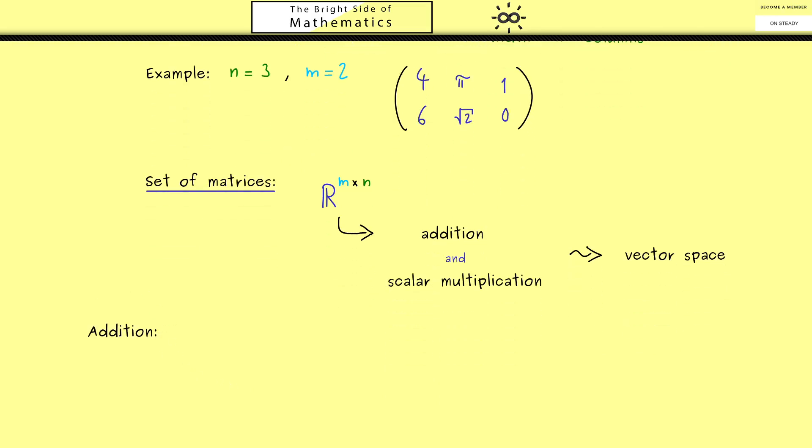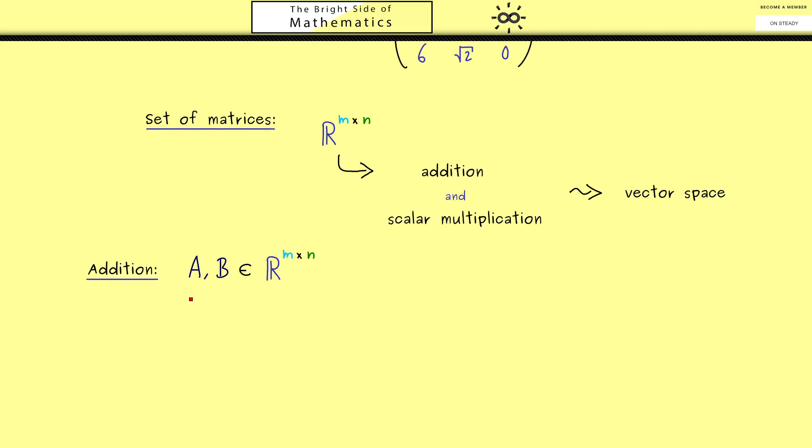Therefore let's immediately start with the definition for the addition of matrices. This might not be a surprise, two matrices of the same shape we can easily add. So maybe let's call the two matrices A and B.